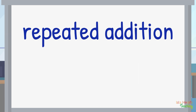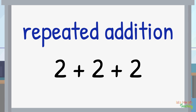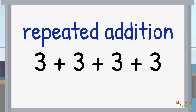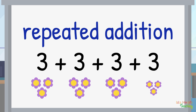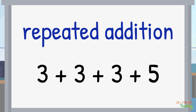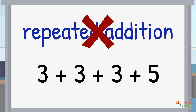When we talk about repeated addition, this means that the same number must be added over and over again. For example, 2 plus 2 plus 2 is repeated addition because all the groups being added are equal in size. 3 plus 3 plus 3 plus 3 is also repeated addition because all the groups added together are equal in size. However, 3 plus 3 plus 3 plus 5 is not repeated addition because the groups are not all equal in size.